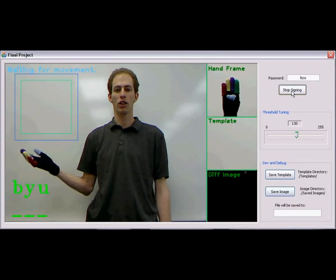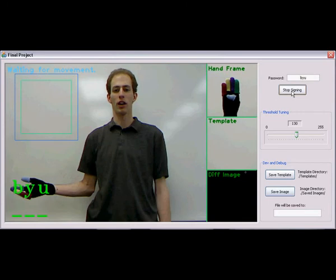You will notice the box here in this portion of the screen - this is the area where the signs are input. Right now we have the debug version of our GUI up. Here we have the password being displayed and then the characters that will be recognized at the bottom.